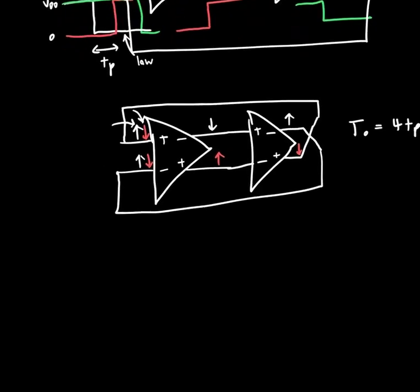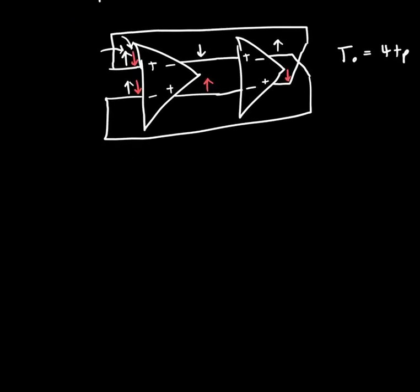But how do we actually make one of these? Well, the simplest way to do it is just with a basic differential amplifier. So we've got our two resistors up top. We've got our two input transistors. We've got some current source that biases the whole thing, ISS.